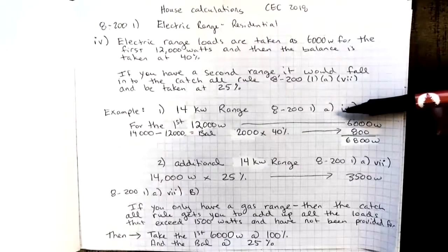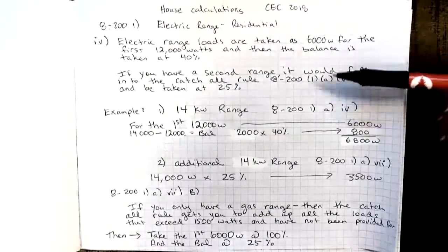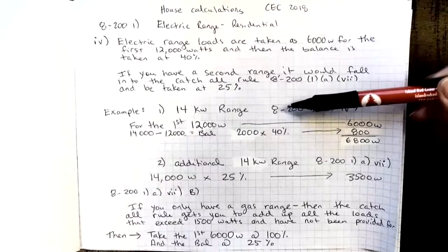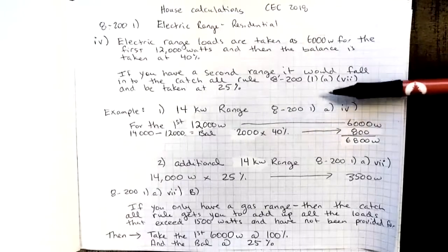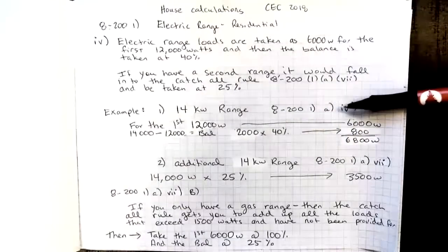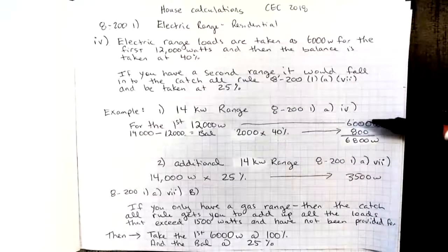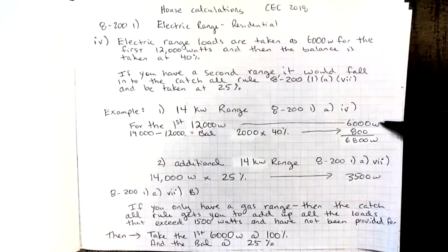So for example, I have two ranges in this home. They're both 14,000 watt ranges. The first range would fall under 8201A4, which means for the first 12,000 watts of that 14, we would apply a demand factor of 6,000 watts.